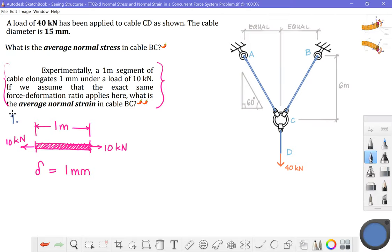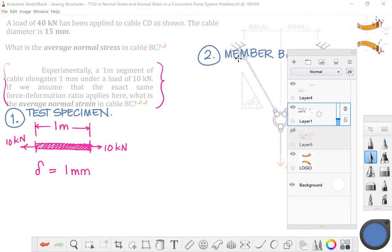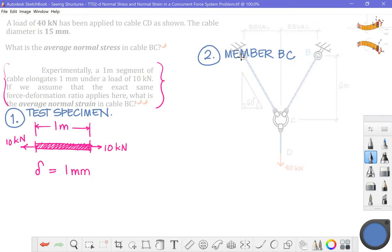I'm going to set up some symbols in this problem. I'm going to use a subscript of one for our test specimen. I'm going to use a subscript of two for member BC. I'll turn the volume down on that layer so that we can see that heading, and very soon I'll hide that layer completely.